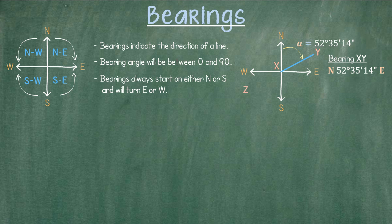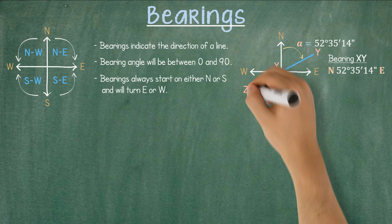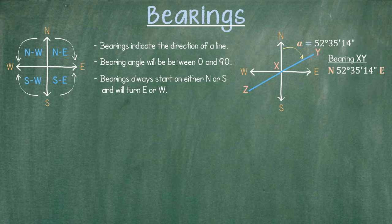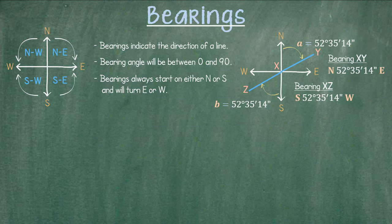Now let's draw another line from point X to point Z, using the same angle value as before. This second angle is in the south to west quadrant. Therefore, we would call out bearing XZ as follows: South 52 degrees 35 minutes 14 seconds West.